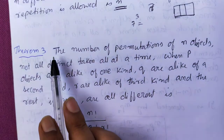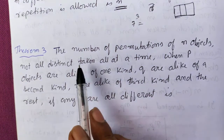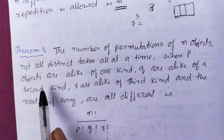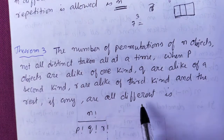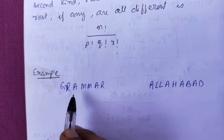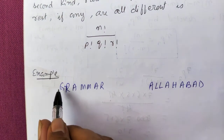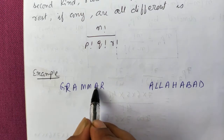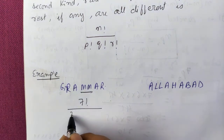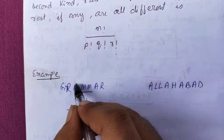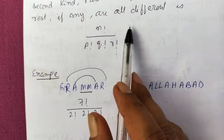The third theorem: the number of permutations of N objects not all distinct, taken all at a time, where P objects are alike of one kind and Q are alike of a second kind. The formula is N! ÷ (P! × Q! × ...). For example, to arrange the word MAHMARA — 7 letters total — we get 7! ÷ (2! × 2! × 2!) since M, A, and R each appear twice.